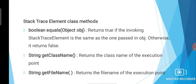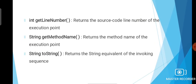The StackTraceElement class consists of several methods. The first is the boolean equals method, which returns true if the invoking stack trace element is the same as the one passed as an object, and false otherwise. Then string getClassName returns the name of the class at the execution point. String getFileName returns the file name of the execution point. Similarly, getLineNumber returns the source code line number of the execution point. Then getMethodName returns the method name for the execution point. Finally, toString returns the string equivalent of the invoking sequence — the details in string format.